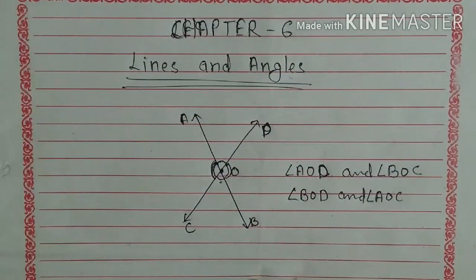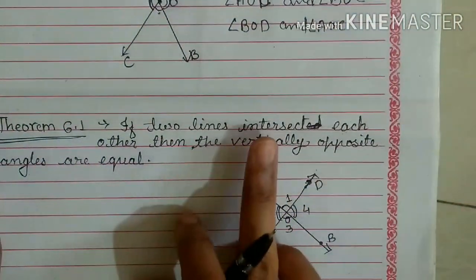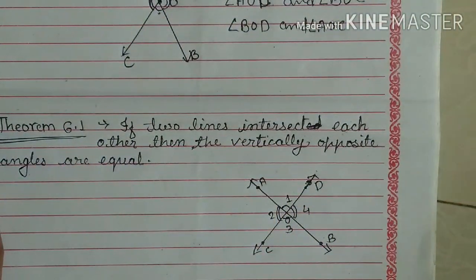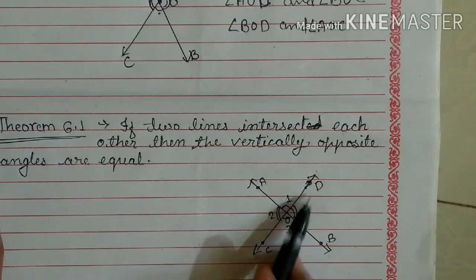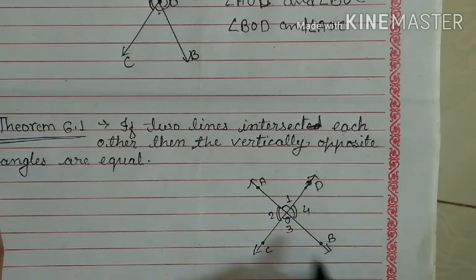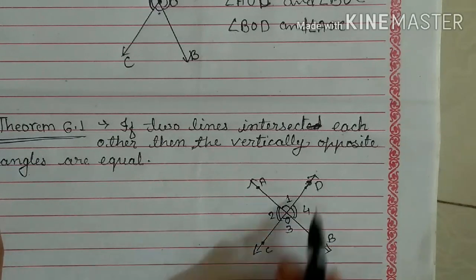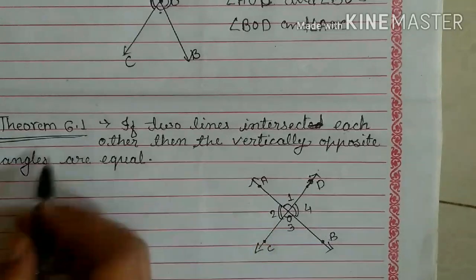Two vertically opposite angles का यहां पर pair बनता है। अब हम चलते हैं अपने theorem की ओर — Theorem number 6.1. So let's see the proof. In the statement above, it is given that two lines intersect each other. Let AB and CD be two lines intersecting at O. They form two pairs of vertically opposite angles — here you see the vertically opposite angles.